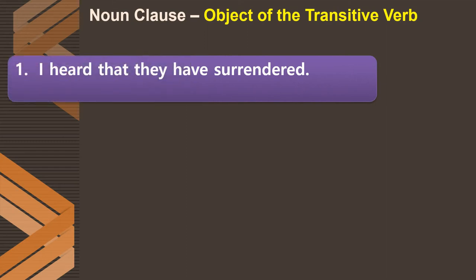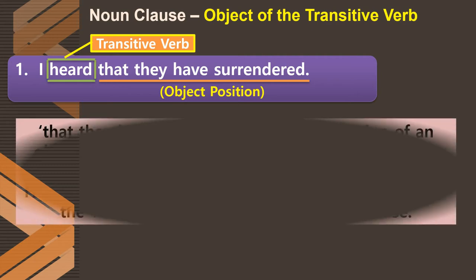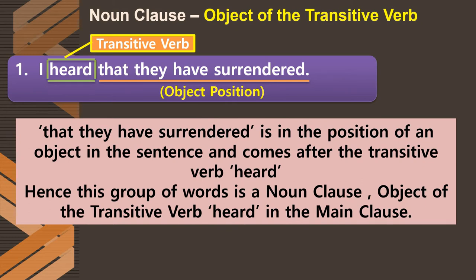First type — noun clause as object of the transitive verb. In 'I heard that they have surrendered,' the question 'what did I hear?' is answered by 'that they have surrendered.' The verb 'heard' is a transitive verb, which requires an object. 'That they have surrendered' is in the position of an object after the transitive verb — so it is called the object of the transitive verb 'heard' in the main clause.